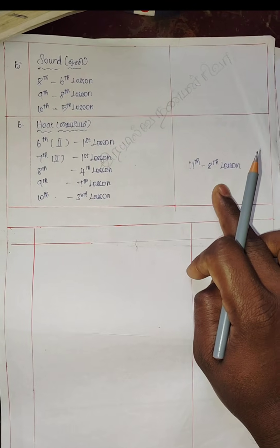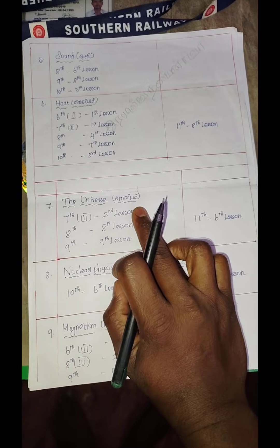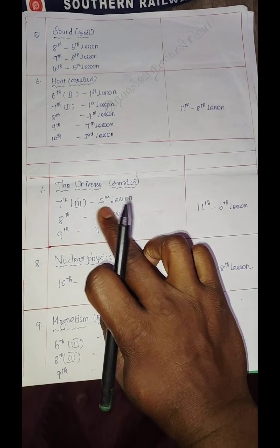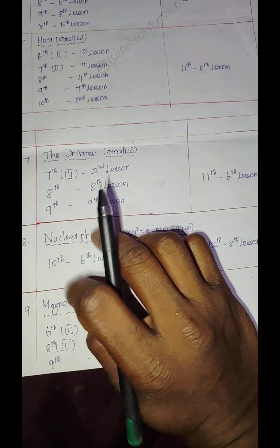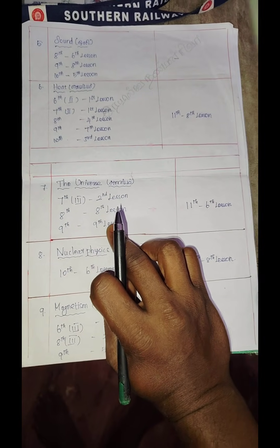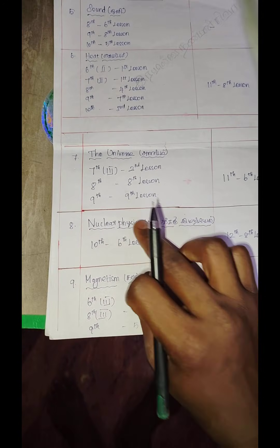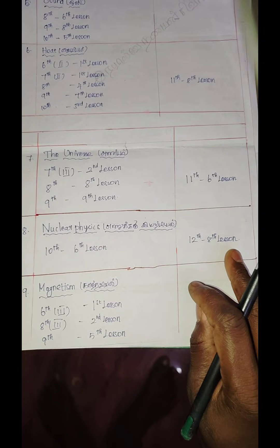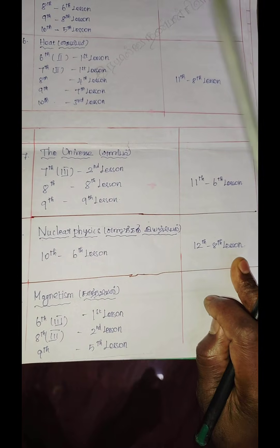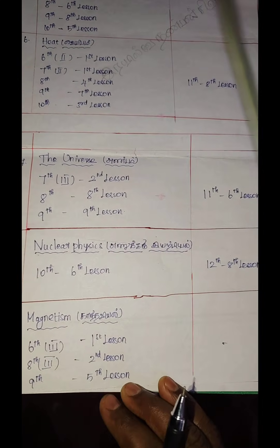Let's have a look at the 3rd lesson. Here we will learn more about the 7th lesson, 4th lesson. The 9th lesson covers nuclear presence. You will have the same power for the 10th, 6th lesson. Magnetism: 1st lesson, 2nd lesson, 9th lesson — we will clear the science topic about the 3rd lesson.